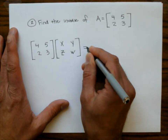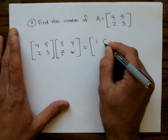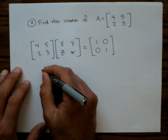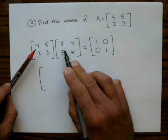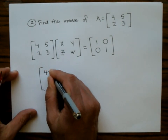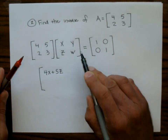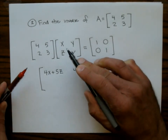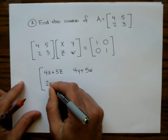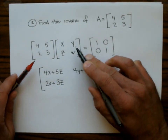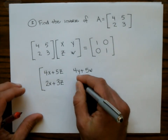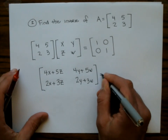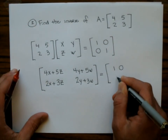I know that if I find the inverse and multiply those together, I get the identity matrix for 2x2 matrices. So doing the matrix multiplication, I end up getting: 4x + 5z, 4y + 5w, 2x + 3z, and 2y + 3w. That equals the identity matrix [1, 0, 0, 1].